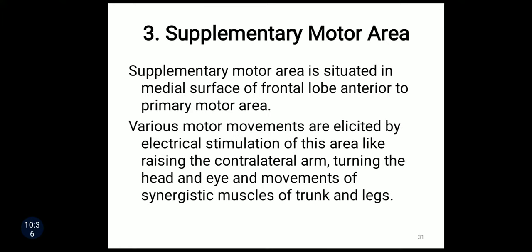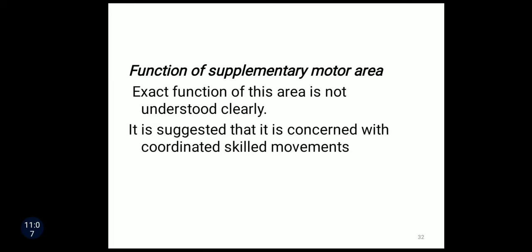The third division of precentral cortex is the supplementary motor area. It is situated on the medial surface of the frontal lobe, anterior to the primary motor area. Various motor movements can be elicited by electrical stimulation of this area, such as raising the contralateral arm, turning the head and eyes, and movements of synergistic muscles of the trunk and limbs. The exact function of this area is not understood clearly, but it is suggested that it is concerned with coordinated skilled movements.